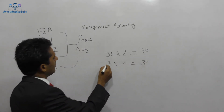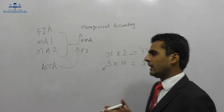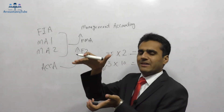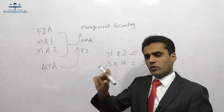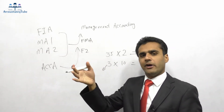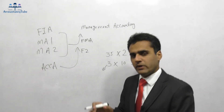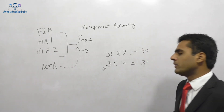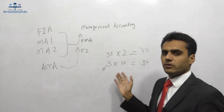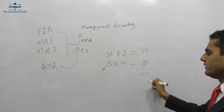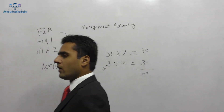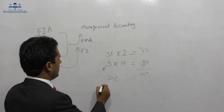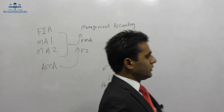The remaining 30 marks come from three scenario-based questions worth 10 marks each. Each scenario presents a detailed case study, followed by several short sub-questions. You read the scenario and answer the questions based on it. In total the paper is 100 marks, and the pass mark — as with all ACCA exams — is 50%.